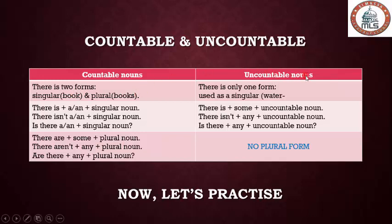Uncountable nouns have only one form and are used as singular, like 'water.' Now, how do we use 'there is' and 'there are'? 'There is' comes with a countable singular noun: 'there is' plus 'a' or 'an' (indefinite article) plus singular noun. Negative form: 'there isn't' plus 'a' or 'an' plus singular noun. Question form: 'Is there a/an' plus singular noun.